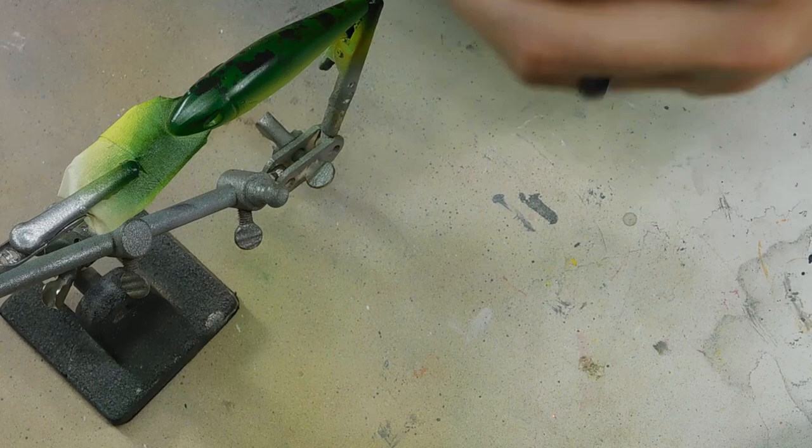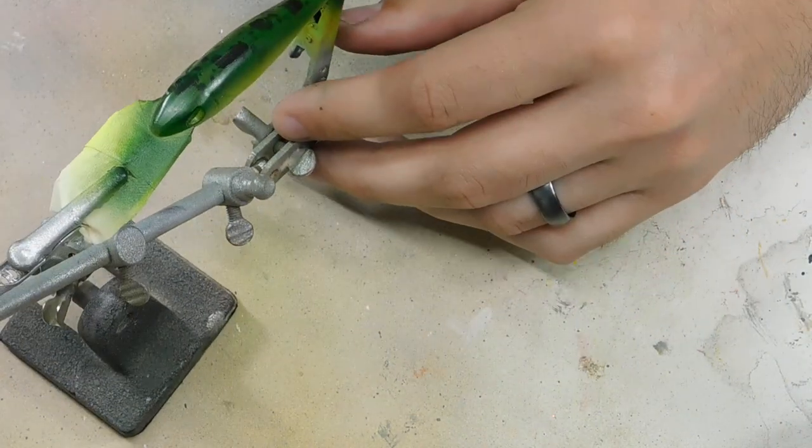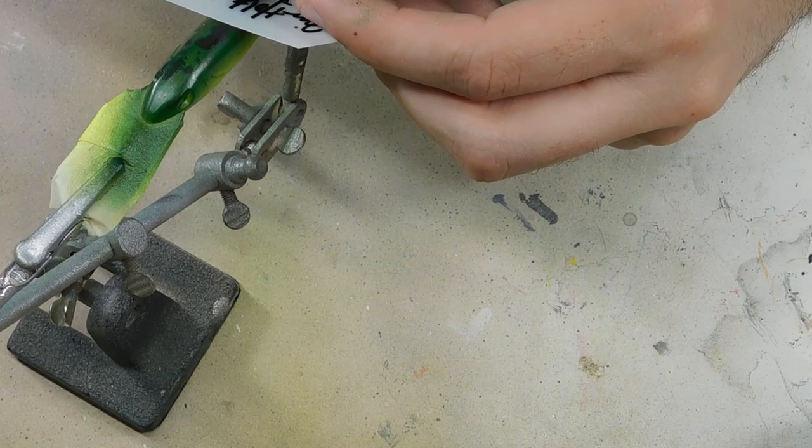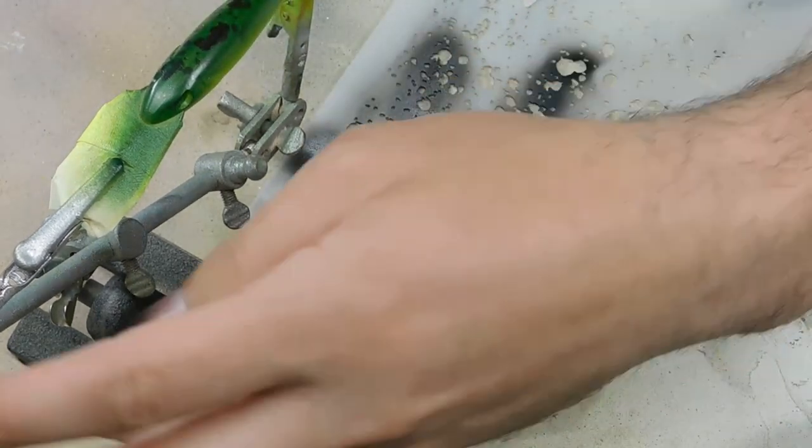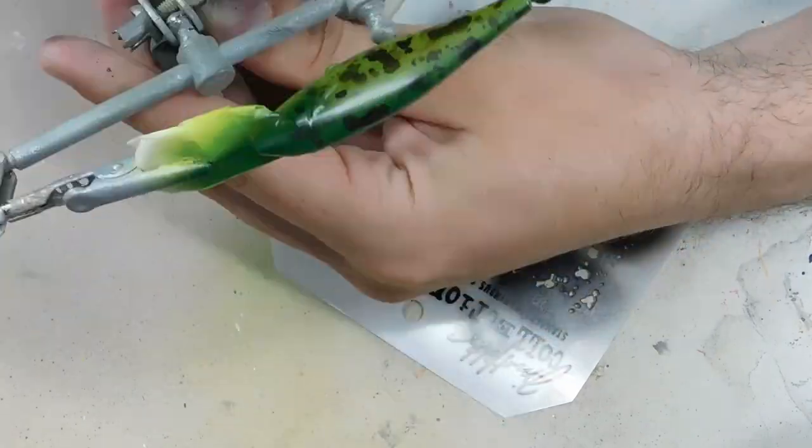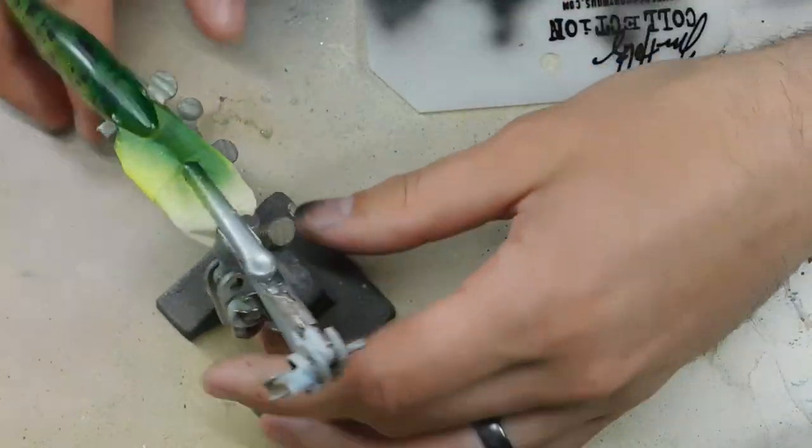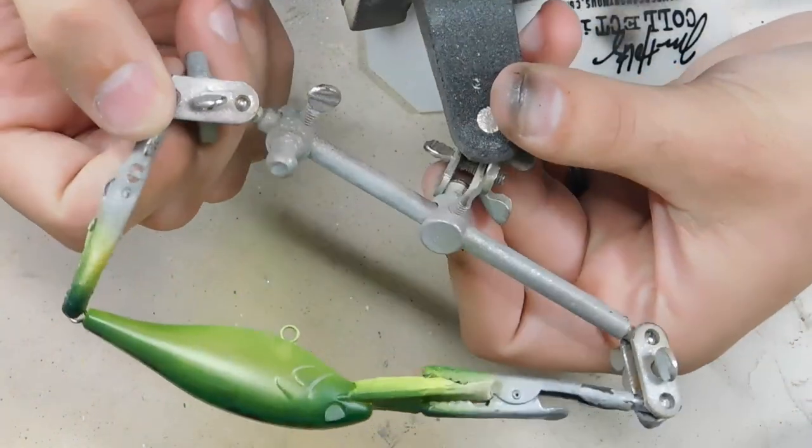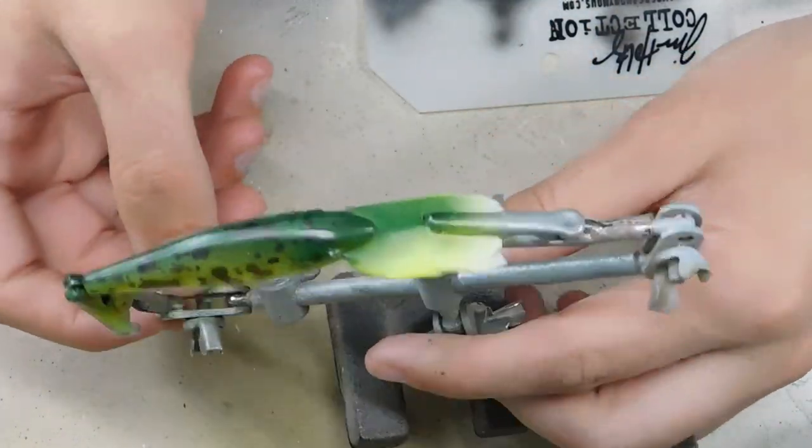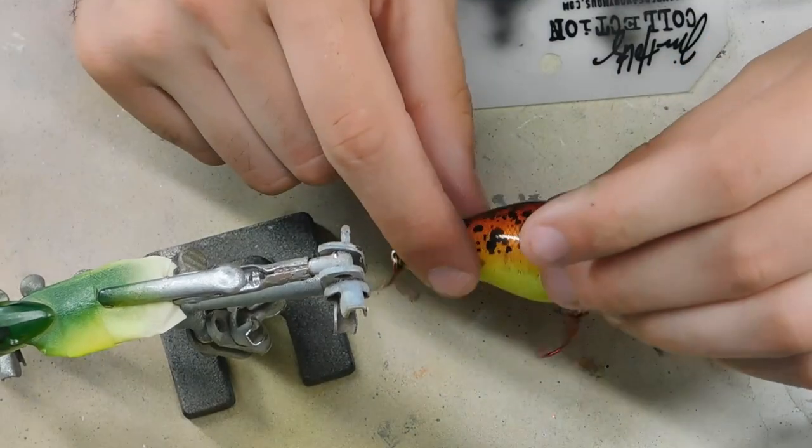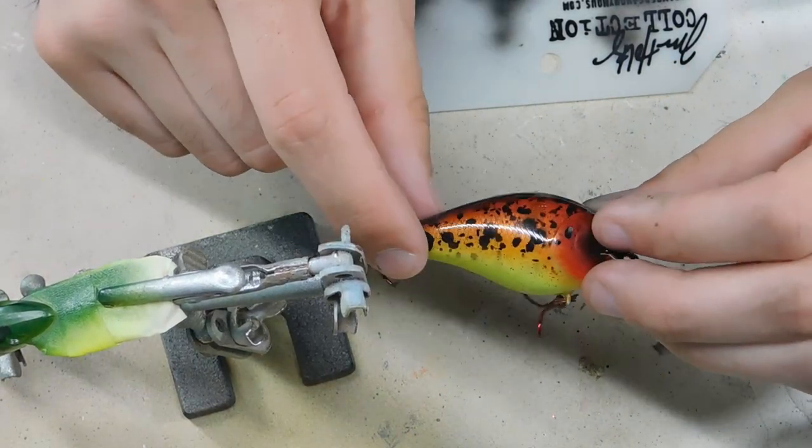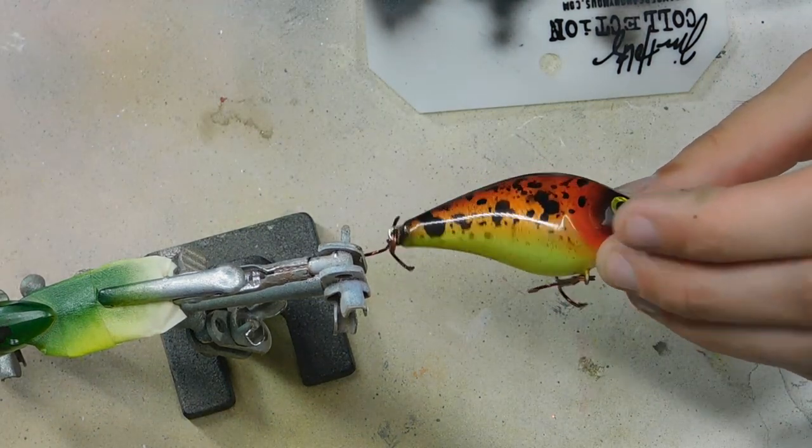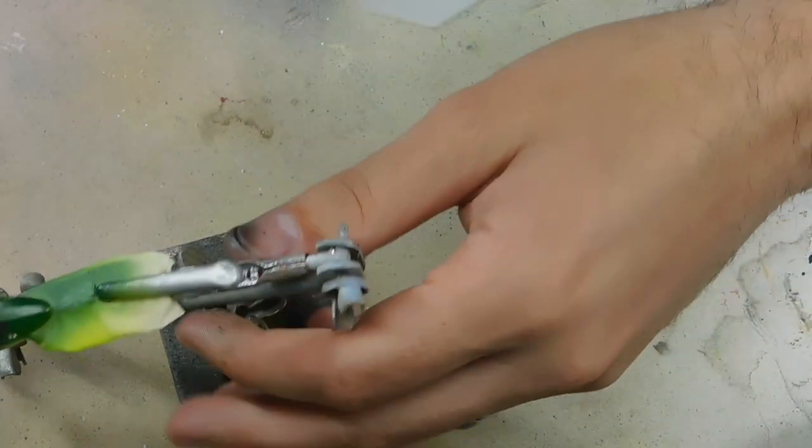It also kind of looks like a bird egg, like a robin egg or something. All right, so there's what one side looks like currently. I'm going to go ahead and flip it over and repeat it on the other side. On this first one I did, I tried really hard to have the same pattern on both sides, and I just don't know if that's really necessary, so I'm not going to worry about it on this one.